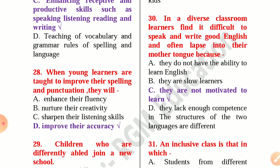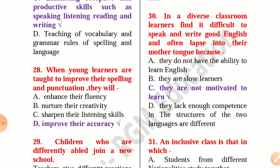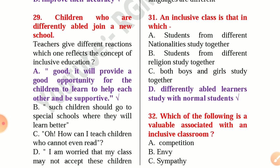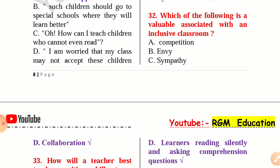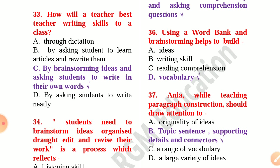Number 30: In a diverse classroom, learners find it difficult to speak and write good English and often lapse into their mother tongue because they are not motivated to learn. Number 31: An inclusive class is one in which differently abled learners study with normal students. Number 32: A value associated with an inclusive classroom is collaboration. Question 33: How will a teacher best teach writing skill to a class? By brainstorming ideas and asking students to write in their own words.